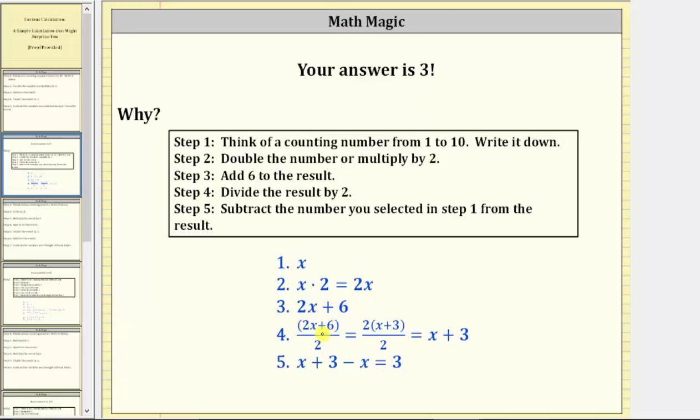If we factor out the two, we have two times the quantity x plus three, which we can check if we distribute, we do still have two x plus six. But now that it's in factored form, notice here we have two divided by two, which simplifies to one, and therefore the expression simplifies to x plus three.